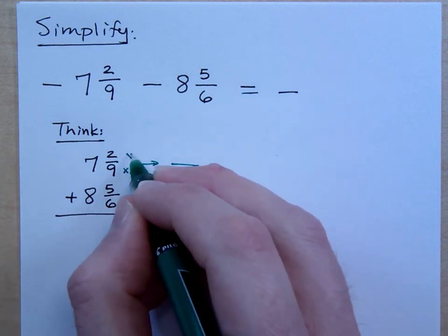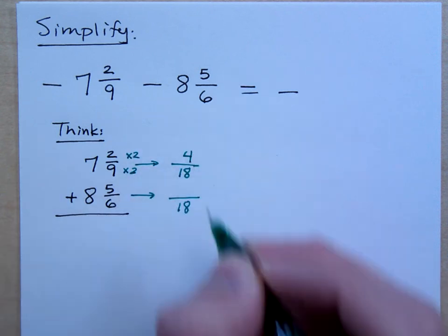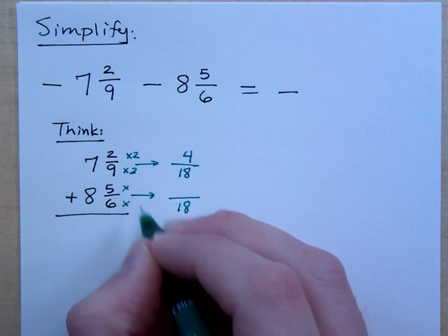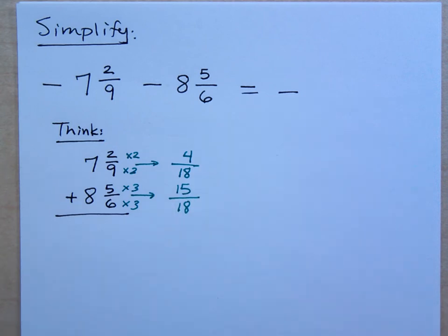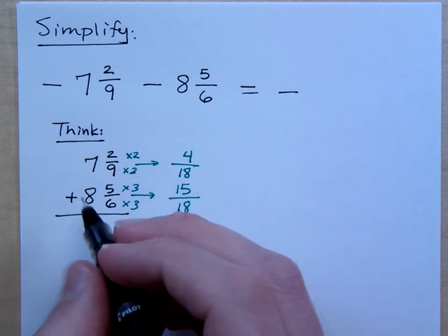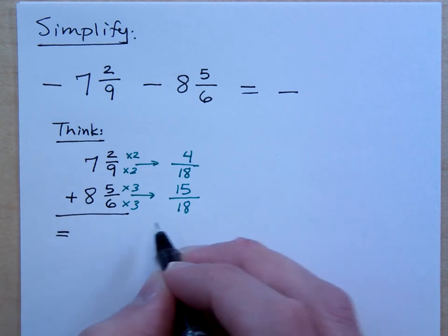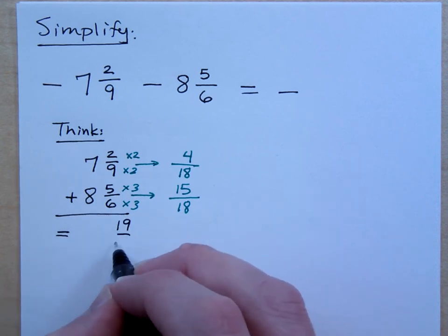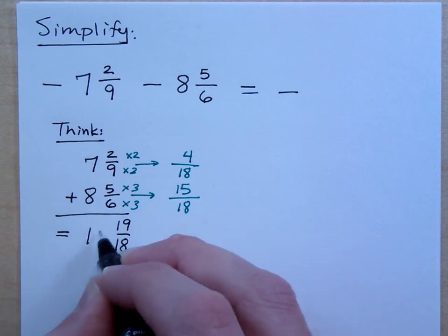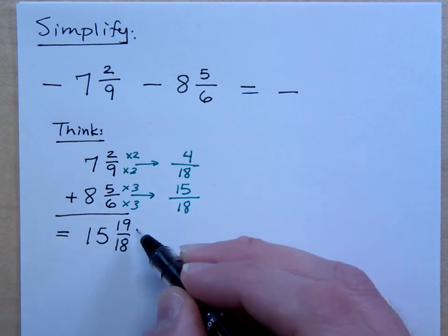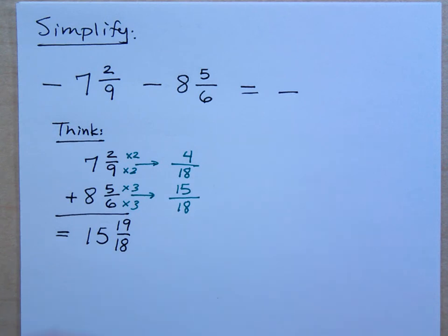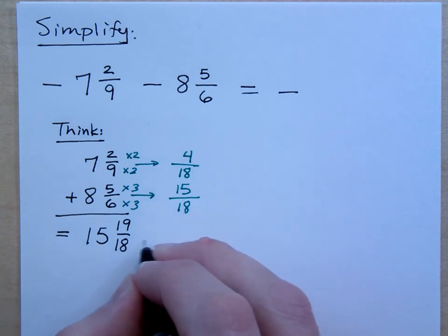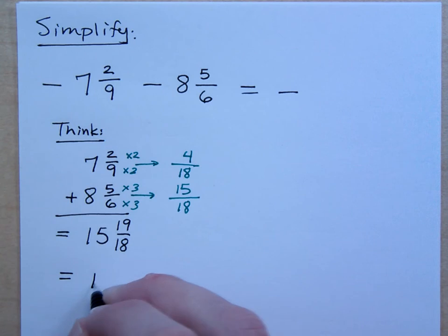So this would be 2 times 9, giving me 4 over 18. And what about the other fraction? It gives me 15 over 18. When I combine this, I get 19 over 18, and then 7 plus 8 is 15. But notice, this is a problem for me, right? What am I going to do with that 19 over 18? I have enough to add back over, so that's going to give me 16.